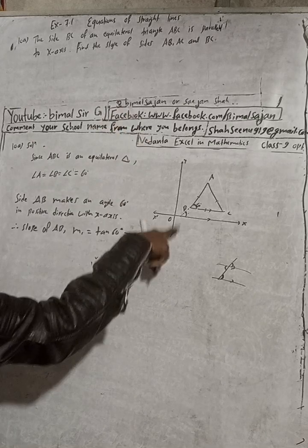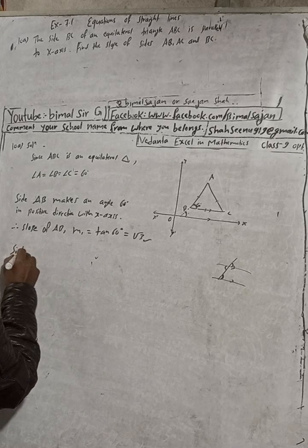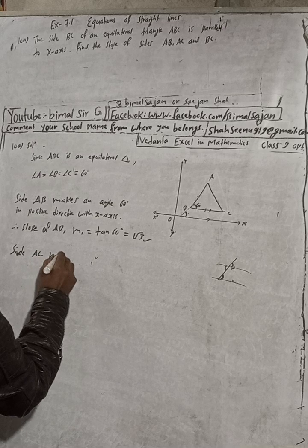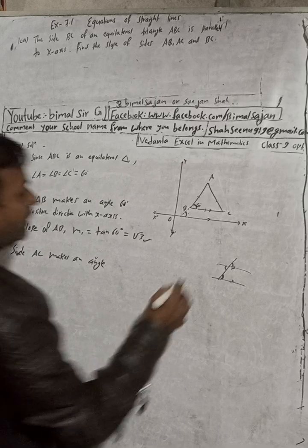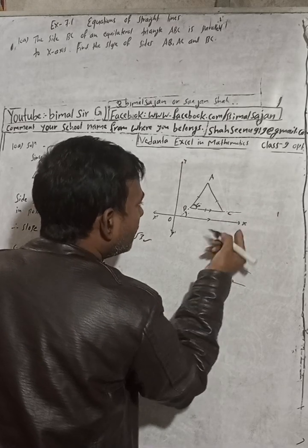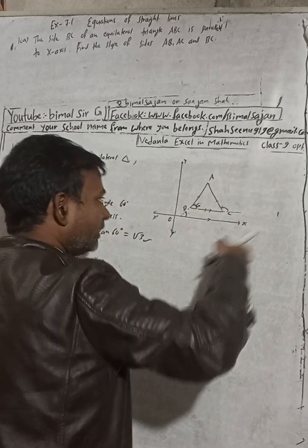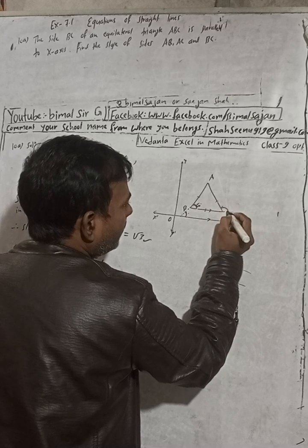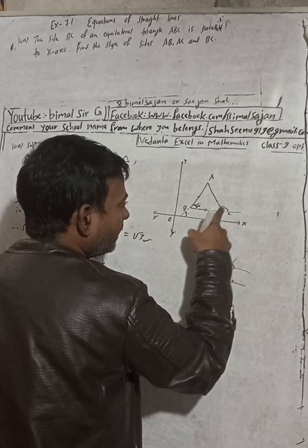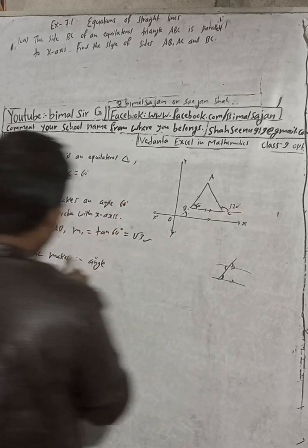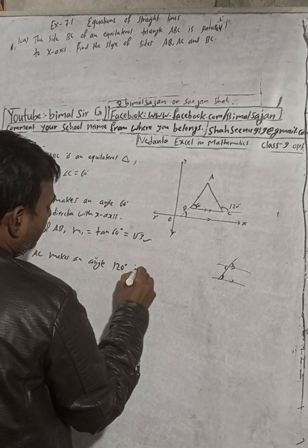Now for side AC: side AC makes an angle — if I extend AC in this direction, the positive or anticlockwise direction is 180 minus 60, which equals 120 degrees. So side AC makes an angle of 120 degrees in the positive direction of the x-axis.